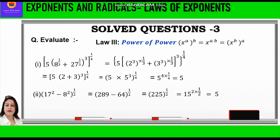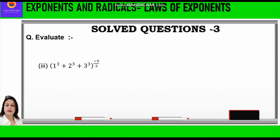Now let's take the third question: in bracket 1 cubed plus 2 cubed plus 3 cubed, raised to power minus 5 by 2. Now 1 cubed is 1, 2 cubed is 8, and 3 cubed is 27. So we write in bracket 1 plus 8 plus 27, raised to power minus 5 by 2. Now 1 plus 8 plus 27 is 36.